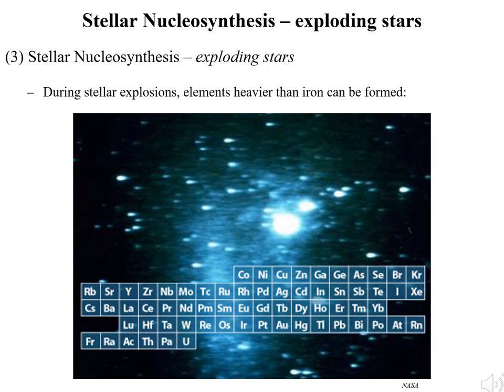To make heavier elements requires different processes which involve a lot more energy. This can happen at the end of the life of a relatively massive star. Such stars become unstable when they reach the end of the line for ordinary nuclear fusion, and at this point they can go out with a bang in enormous explosions called novae and supernovae.